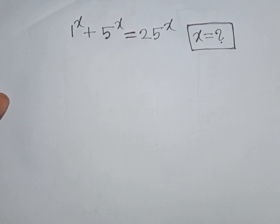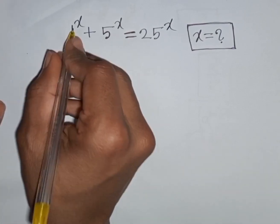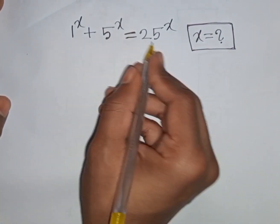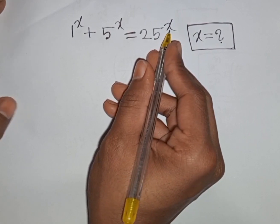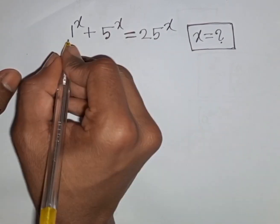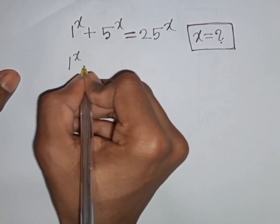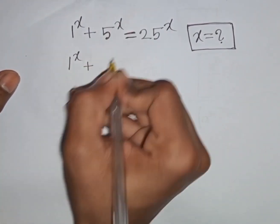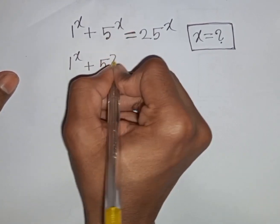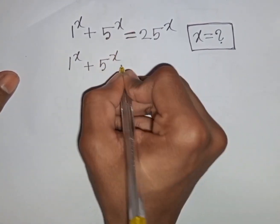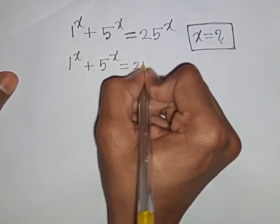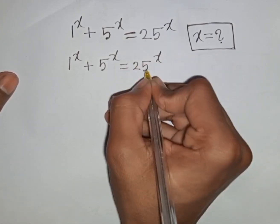How to solve 1^x + 5^x = 25^x. Find the value of x. So we have 1^x + 5^x = 25^x.